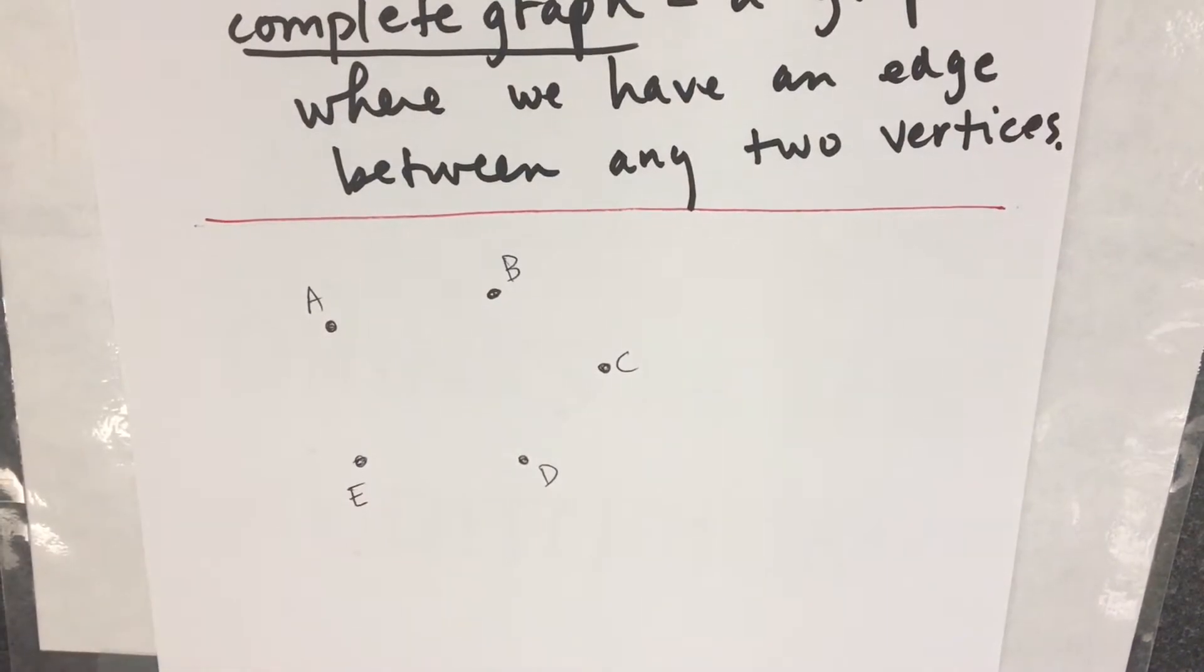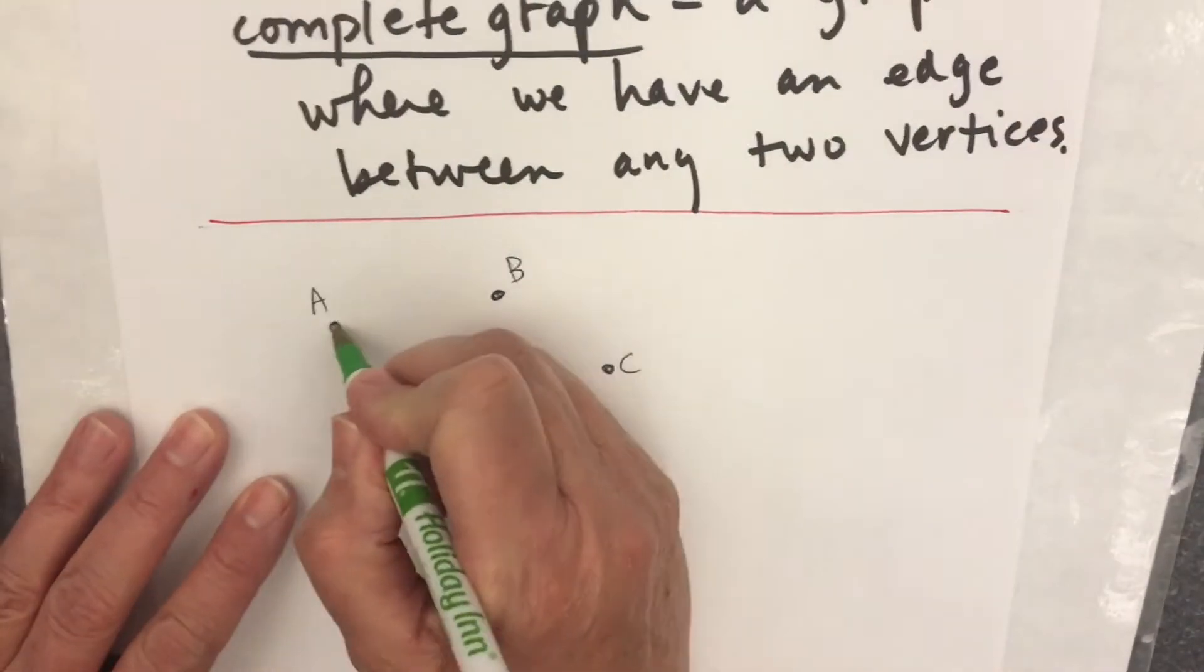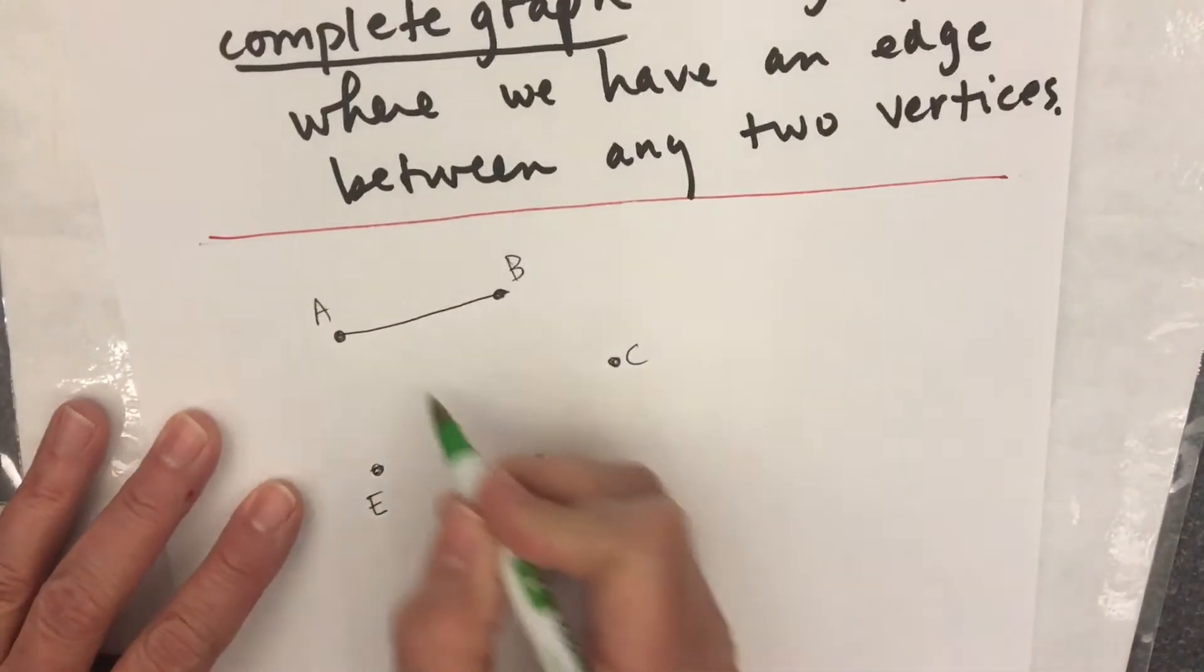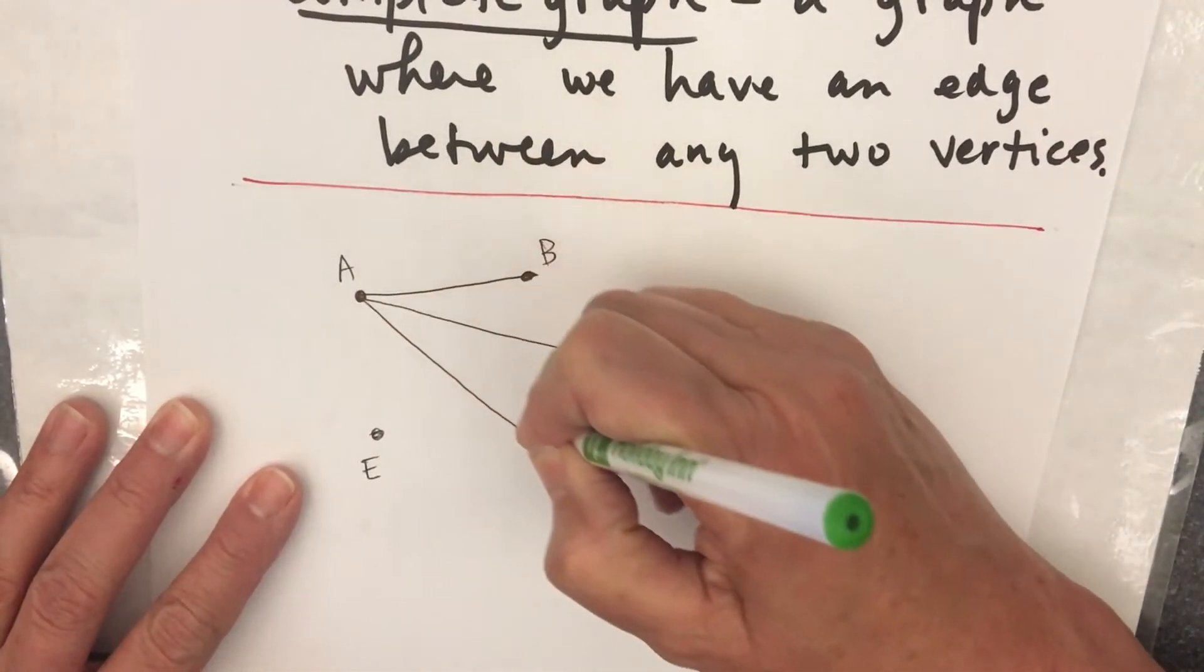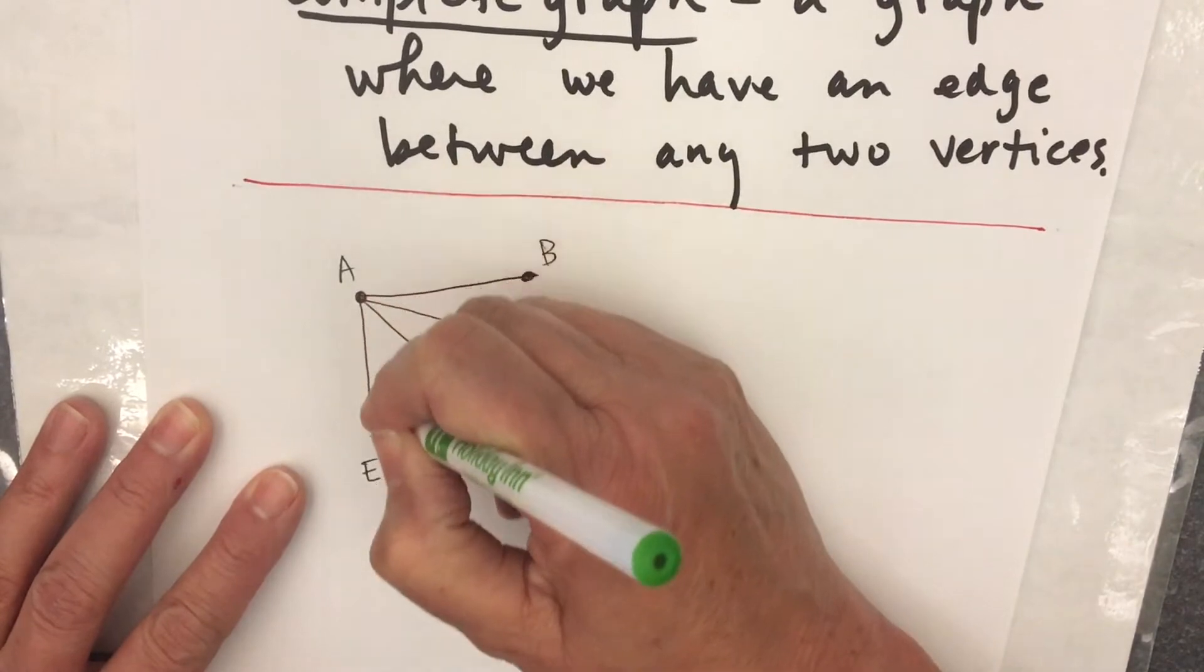For a complete graph, there will be an edge from A to B. There'll be an edge from A to C. There's an edge from A to D, and there's an edge from A to E.